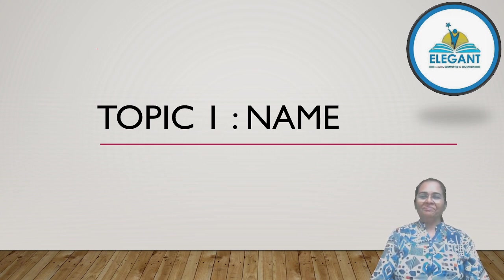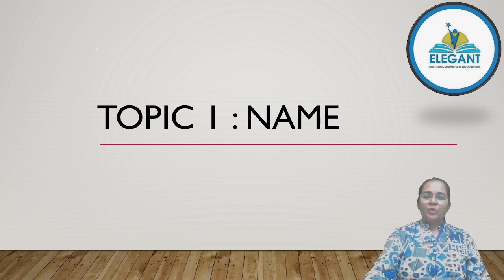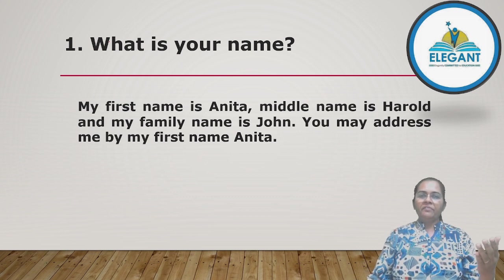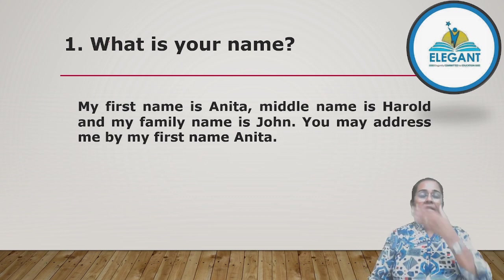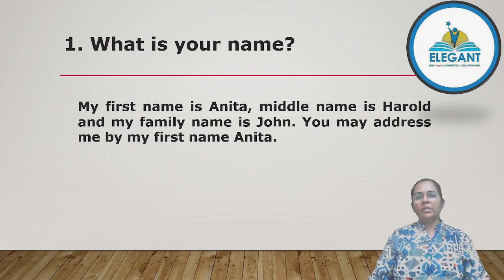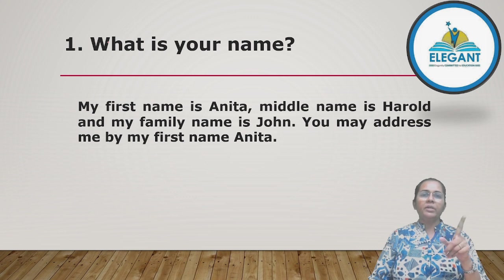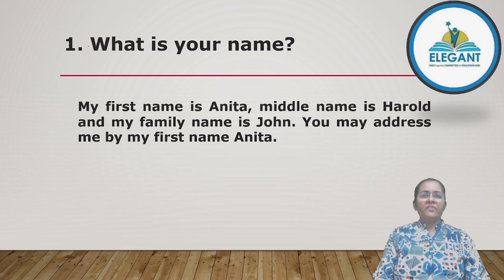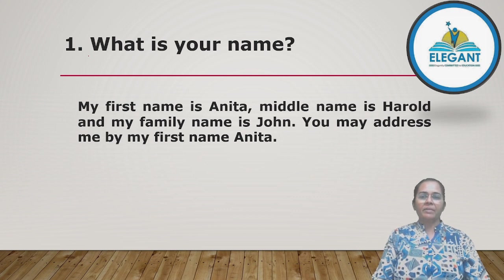Let us begin IELTS speaking part 1, topic 1: the name. Question number 1 — what is your name? In normal circumstances you would say 'my name is Anita John,' but remember this is an IELTS interview and you cannot answer in short. So the answer would be: 'My first name is Anita, middle name is Harold, and my family name is John. But ma'am, you may address me by my first name, Anita.'